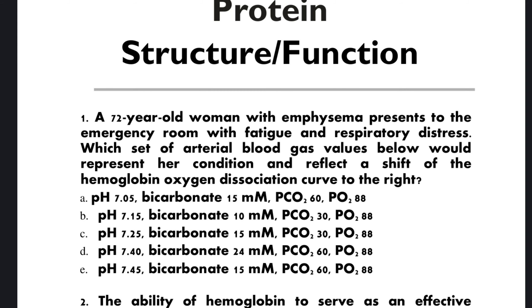Question one: A 72-year-old woman with emphysema presents to the emergency room with fatigue and respiratory distress. Which set of arterial blood gas values below would represent her condition and reflect a shift of the hemoglobin-oxygen dissociation curve to the right?